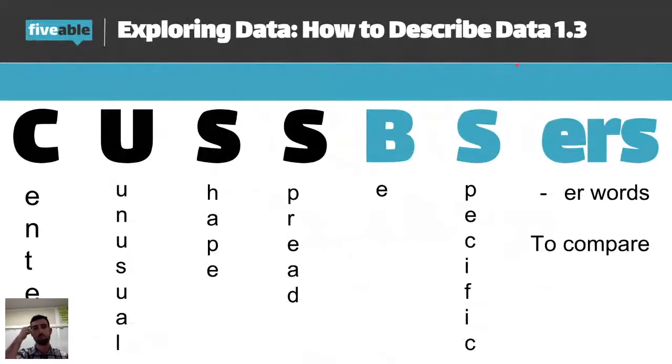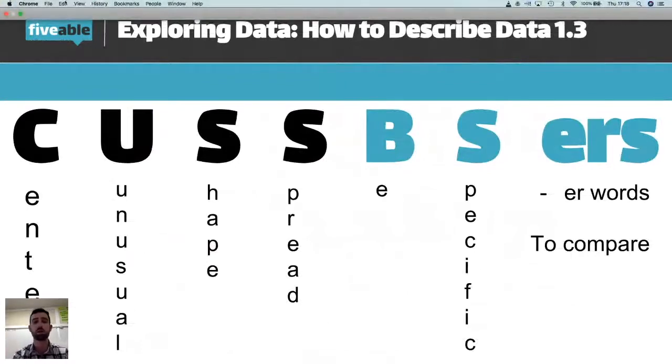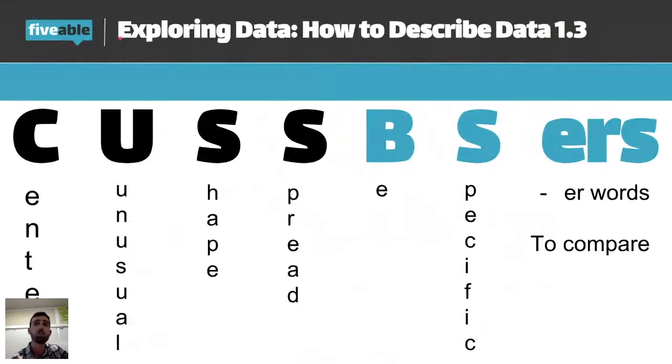So cuss and BS. What do these all mean? The C stands for center. So you always want to describe the center of a distribution. Next, the U stands for unusual. So anything that's unusual about the data set, we want to tell the reader or the AP readers that we know it exists. We can see there's an outlier or we can see there's a gap.